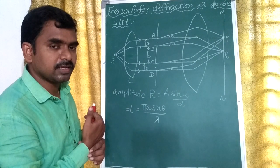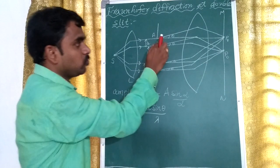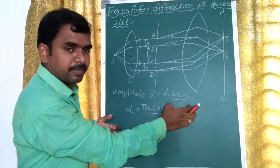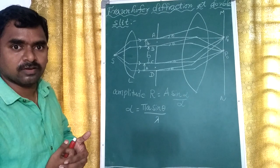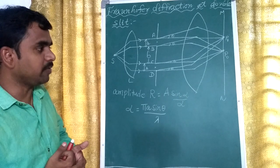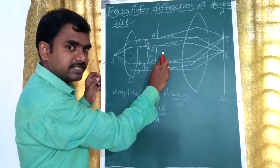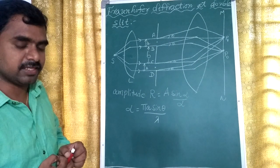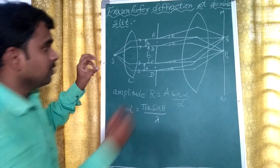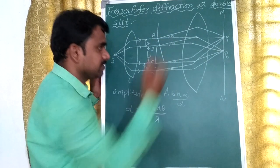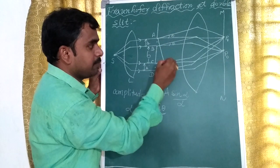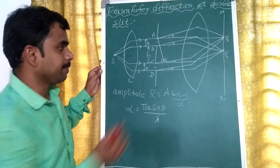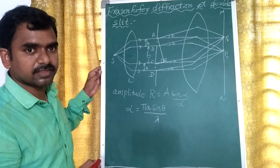On the screen we are observing both the diffraction pattern and the interference pattern. For the interference pattern, two amplitudes are participating — they have the same amplitude, A sinα/α. Now we have to first calculate the path difference. To calculate the path difference, we draw a normal. CE is the path difference between the two diffracted rays, and this angle is also theta.